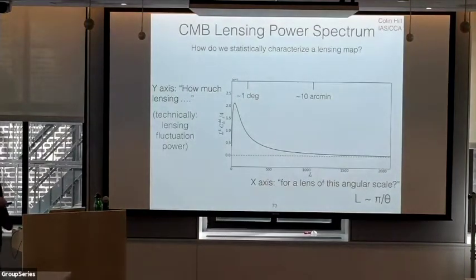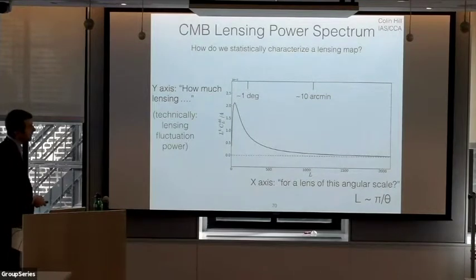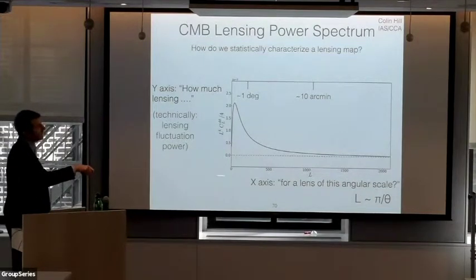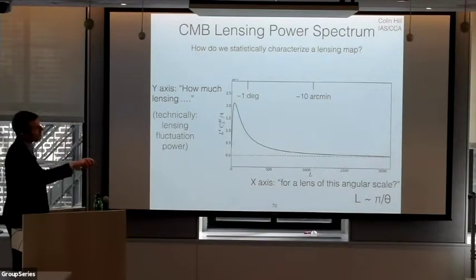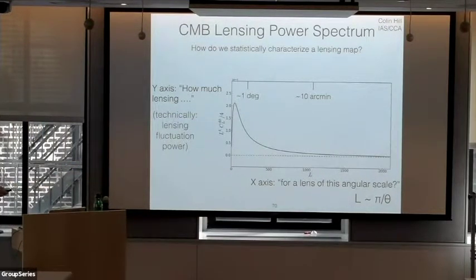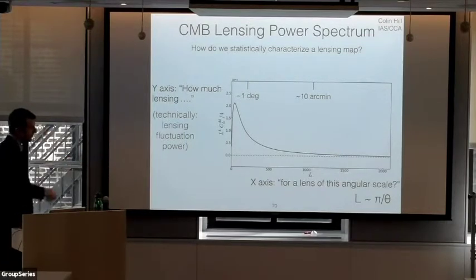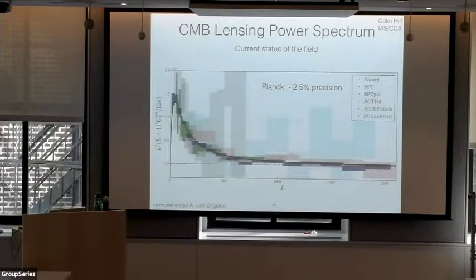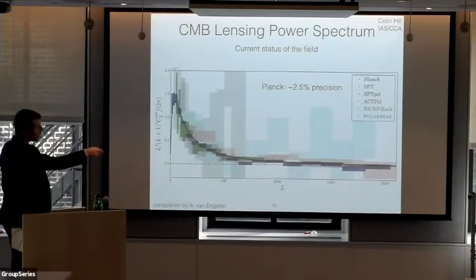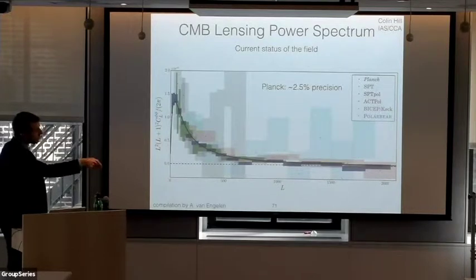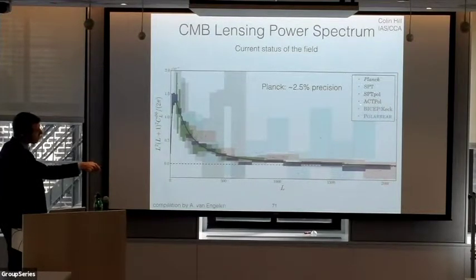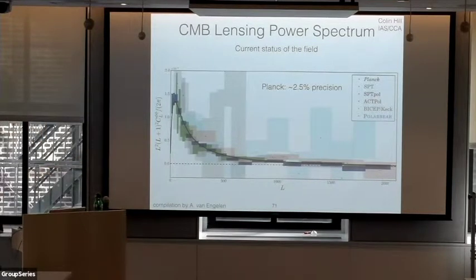How do we statistically extract information from these maps? They're close to Gaussian random fields, particularly on large scales, so we characterize lensing maps with their power spectrum — how much lensing fluctuation power there is as a function of angular scale. A multipole of around 200 is a scale around a degree; L of 1000 corresponds to around 10 arcminutes. Planck has measured the lensing power spectrum at 40 sigma, corresponding to 2.5% precision. The most recent ACT measurements are also shown, and I'll show a forecast for how well we expect to do with the current ACT data shortly.